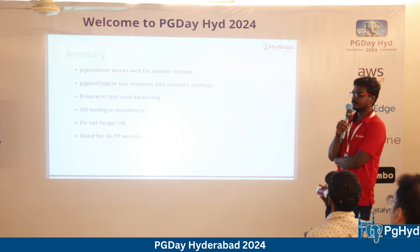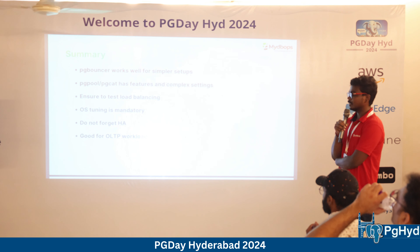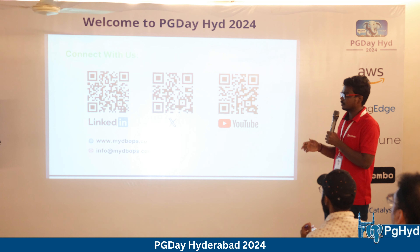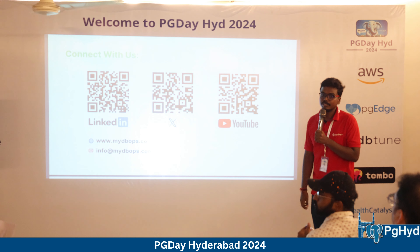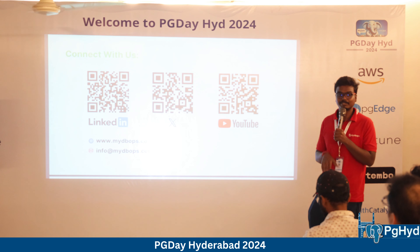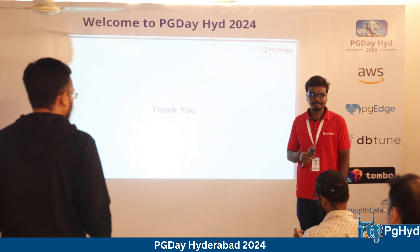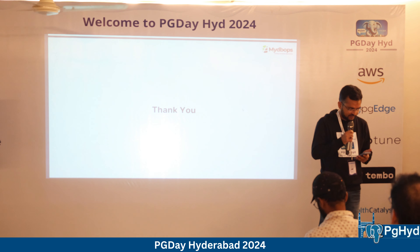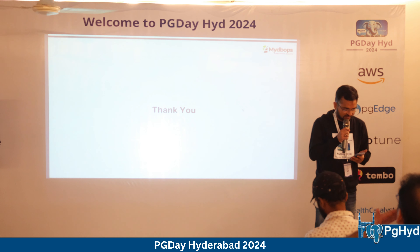PG Cat is the advanced version of PG Bouncer — essentially a fork that supports all the same settings, making migration from PG Bouncer easy. Unlike PG Bouncer which is single-process, PG Cat is multi-process and can utilize all CPU cores. It also supports read routing and query caching based on TTL, making it suitable for complex architectures like Patroni. A benchmark by the Tempo team shows PG Cat has significantly lower latency than PG Bouncer with higher connection counts.